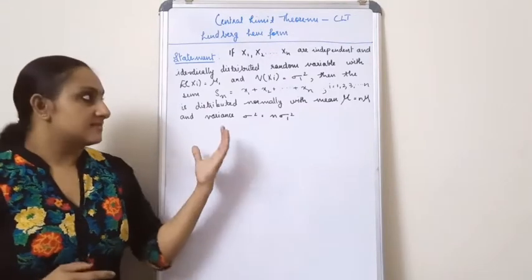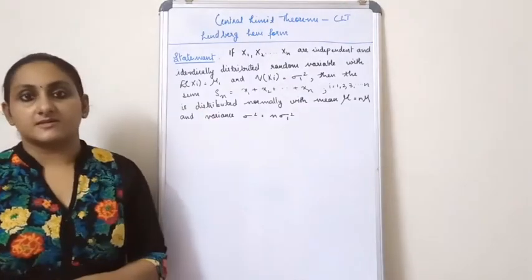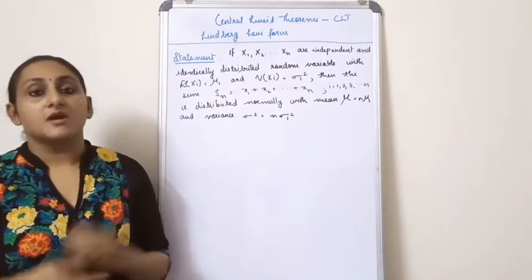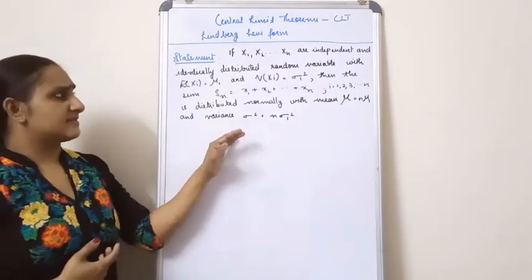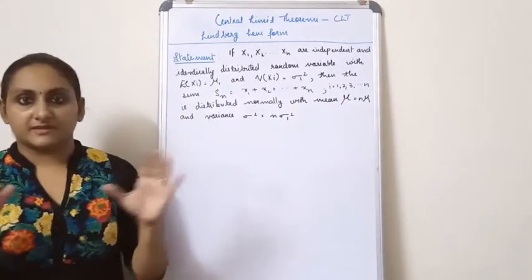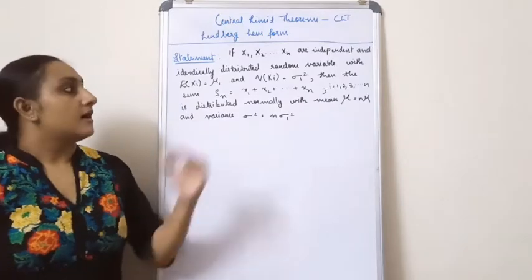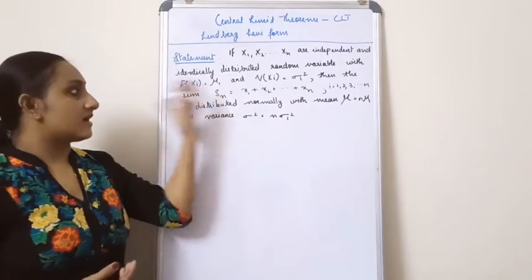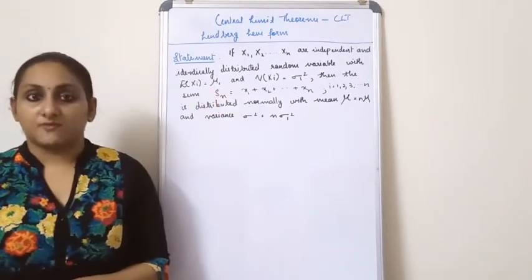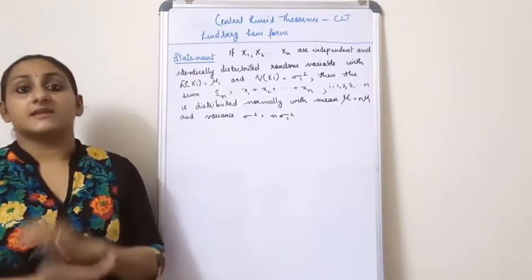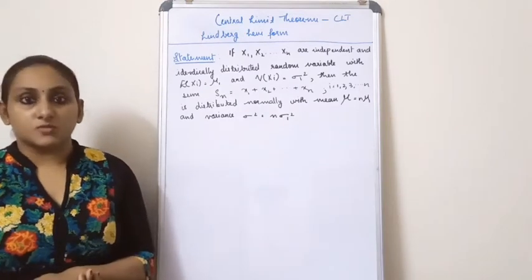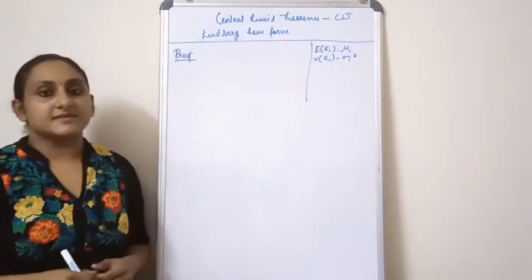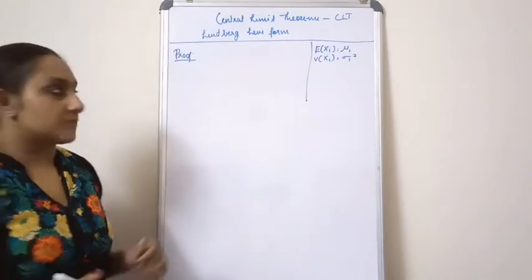This is the statement of the theorem. We will now move on to the proof. This is a very big theorem, but we take the information from the statement and prove that the statement is correct. Let's start the proof.